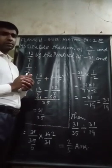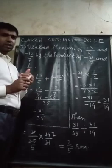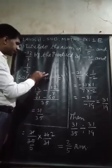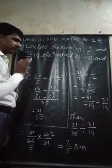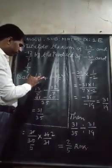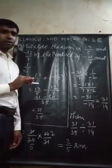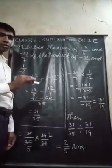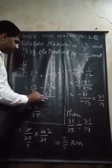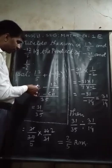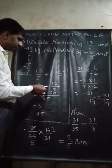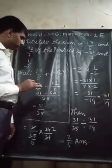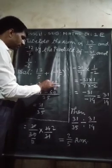This is the question. Now let us go towards the solution section. In the solution, first we get sum of 13 upon 5 and minus 12 upon 7. So 5 and 7 both are denominators of given fraction. First, we get LCM of 5 and 7. LCM will be 35. We can write 13 upon 5 minus 12 upon 7.